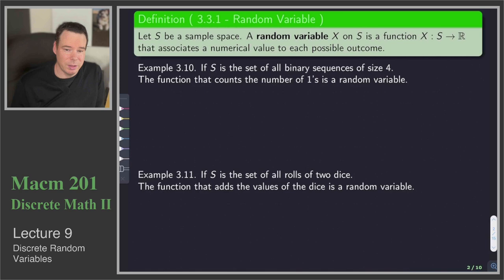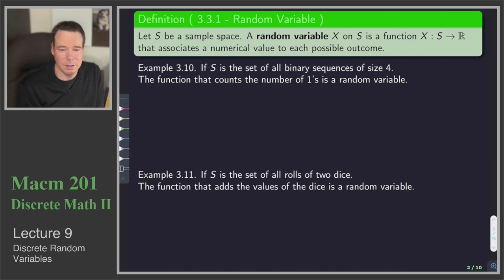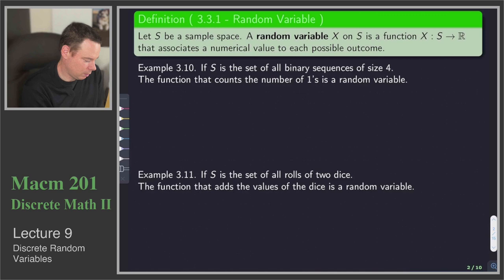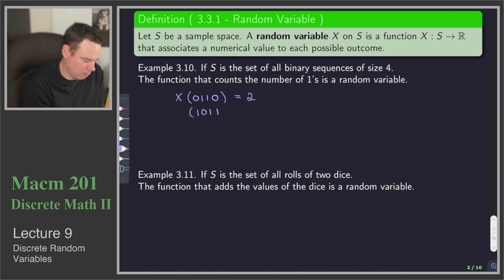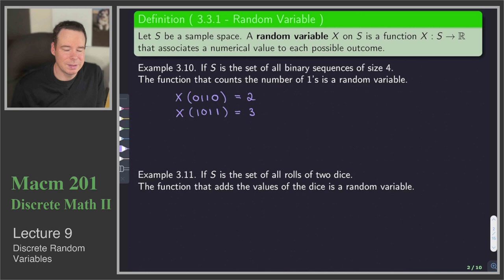Let's have a look at a few examples to get a feel for what random variables are. In the first example, S is the set of all binary sequences of size 4. The function that counts the number of ones is a random variable, because for any element in our sample space — any sequence of length 4 — it returns a numerical value: the number of ones. For example, the sequence 0,1,1,0 returns 2, and the sequence 1,0,1,1 returns 3. We can do this for every one of the 2⁴ or 16 binary sequences of length 4.